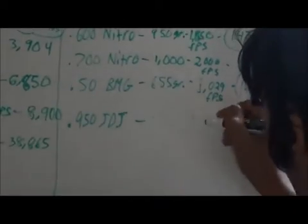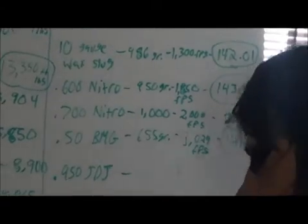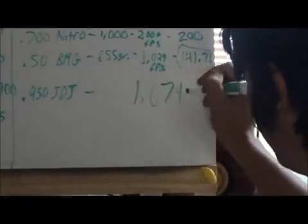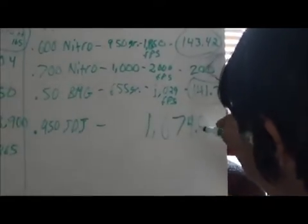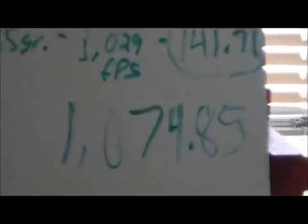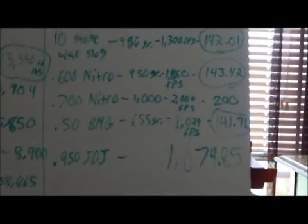A 950 JDJ has a Taylor Knockout formula of 1,000. That's a lot of horsepower right there compared to the 50 BMG and the 10 gauge wax slug. But the thing that I would like to know is why is a 10 gauge wax slug as powerful as a 50 BMG, and a 600 Nitro is just as powerful as a 50 BMG? You can shoot a 50 BMG just as accurate as a 600 Nitro. It has a higher ballistic coefficient, which doesn't make any sense.